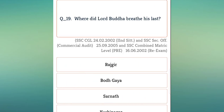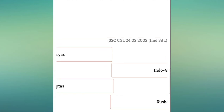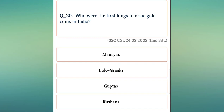Where did Lord Buddha breathe his last? Next, who was the first king to issue gold coins in India? The Indo-Greeks were the first to issue gold coins in India.